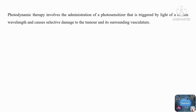In photodynamic therapy, three components work together: a photosensitizer, a light source, and oxygen. When the photosensitizer is excited by a specific wavelength of light, it can interact with its surroundings in one of two ways. These reactions are classified as type 1 and type 2.